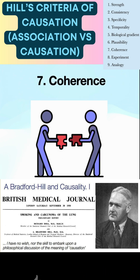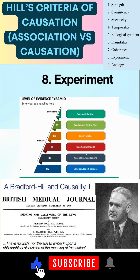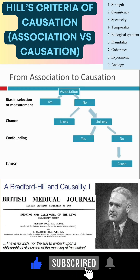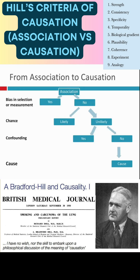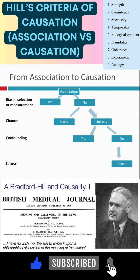The causal relationship is coherent or consistent with other known facts and does not conflict with established principles. Experimental evidence can provide stronger support for causation. Analogy: similarities to other established causal relationships. Some epidemiologists prioritize ruling out chance, bias and confounding to derive causation from association over these criteria.